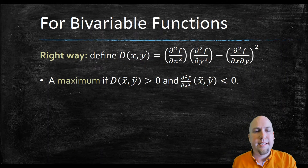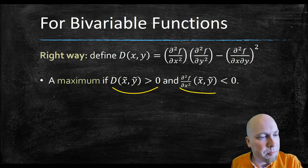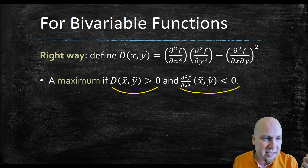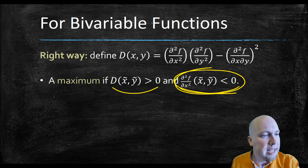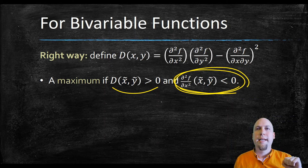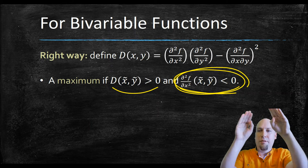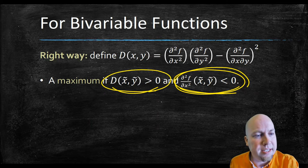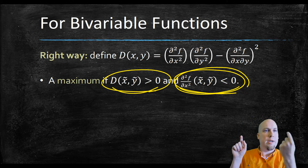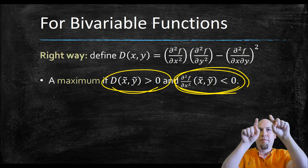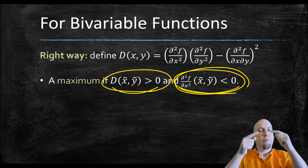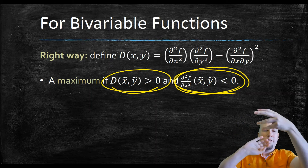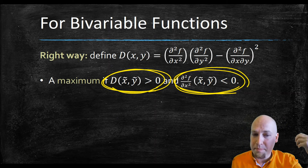Our first case: if D is positive and the second partial with respect to x is negative, then that critical point is a maximum. The second x partial being negative tells me it's concave down in the x direction — the tippy top of an upside-down parabola. And D being positive tells me the concavity is the same in every direction. So if it's concave down in the x direction, it's concave down in every direction.